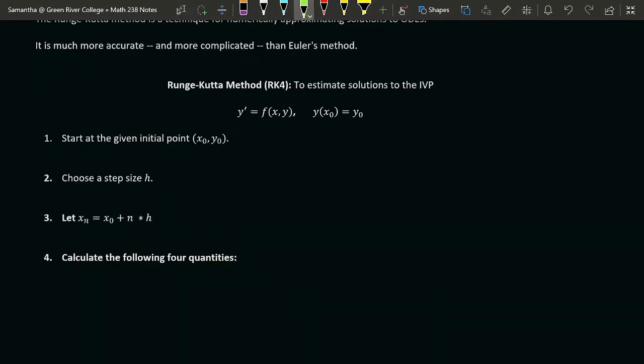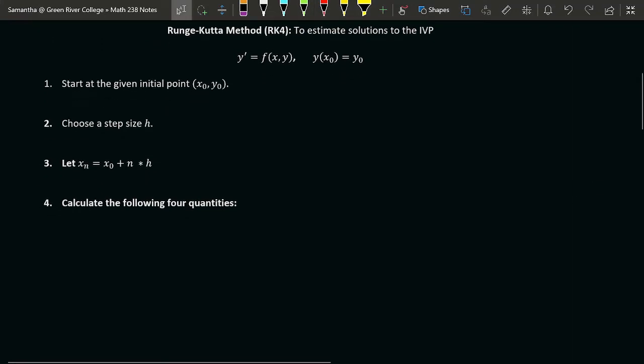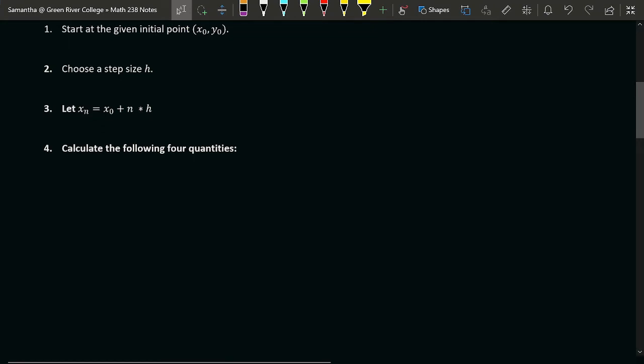So RK4 is designed, just like Euler's method, to estimate solutions to initial value problems. So we have our y prime, the slope of our tangent line, which is given by some function called f of xy, and then we have some initial known point y of x0 equals y0. Just as with Euler's method, the first three steps are unchanged. You have our initial point, which is in some sense our starting location. You have a step size, which is called h, and then you have a sequence of x values, which are equally spaced, xn is equal to your initial x, and then take n steps of size h.